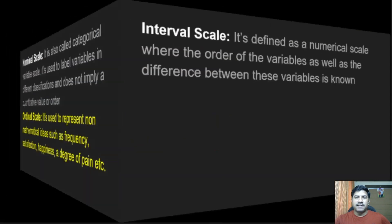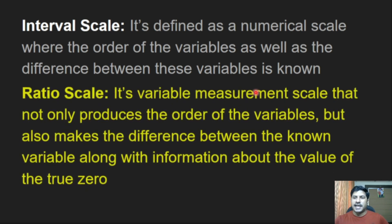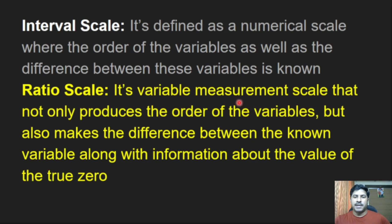Interval scale is defined as a numerical scale where the order of the variables as well as the difference between these variables is known. Ratio scale is a variable measurement scale that not only produces the order of variables but also makes the difference between variables along with information about the value of true zero.